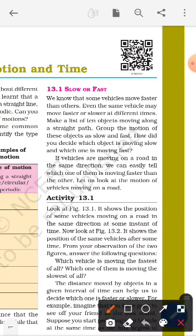So let's see. Make a list of 10 objects moving along a straight path. Group the motion of these objects as slow and fast. For example, just make a list of 10 objects like car, cycle, bullock cart, train, scooter. So now they all are moving in a straight path.